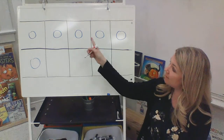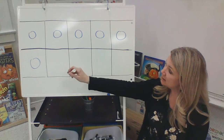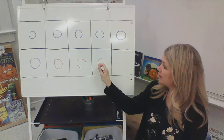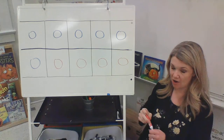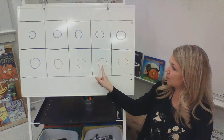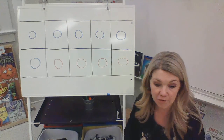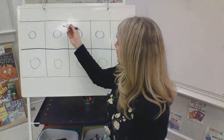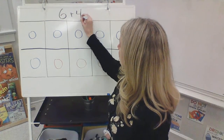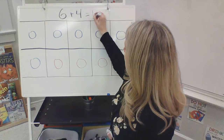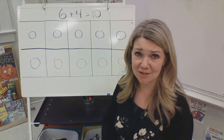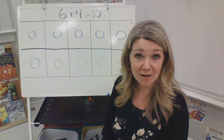Let's see. I have one, two, three, four, five, six, and I want seven, eight, nine, ten. So how many circles did I need? One, two, three, four — I needed four more circles. Six circles plus four circles equals ten circles. Good job, kindergarten. That is really, really hard math, and you did it. It was a challenge.